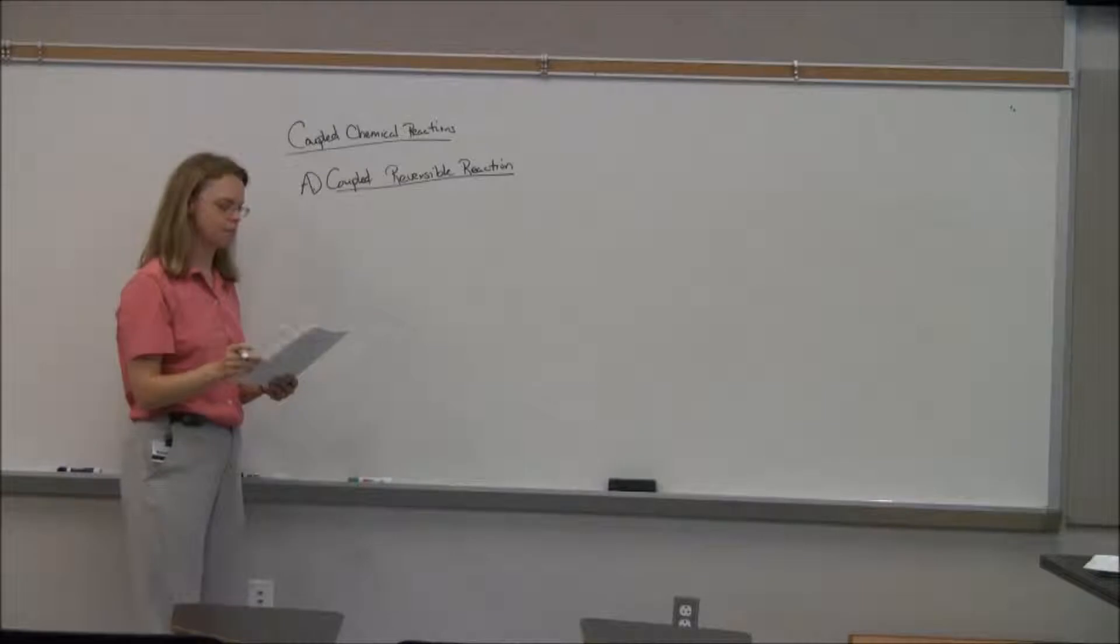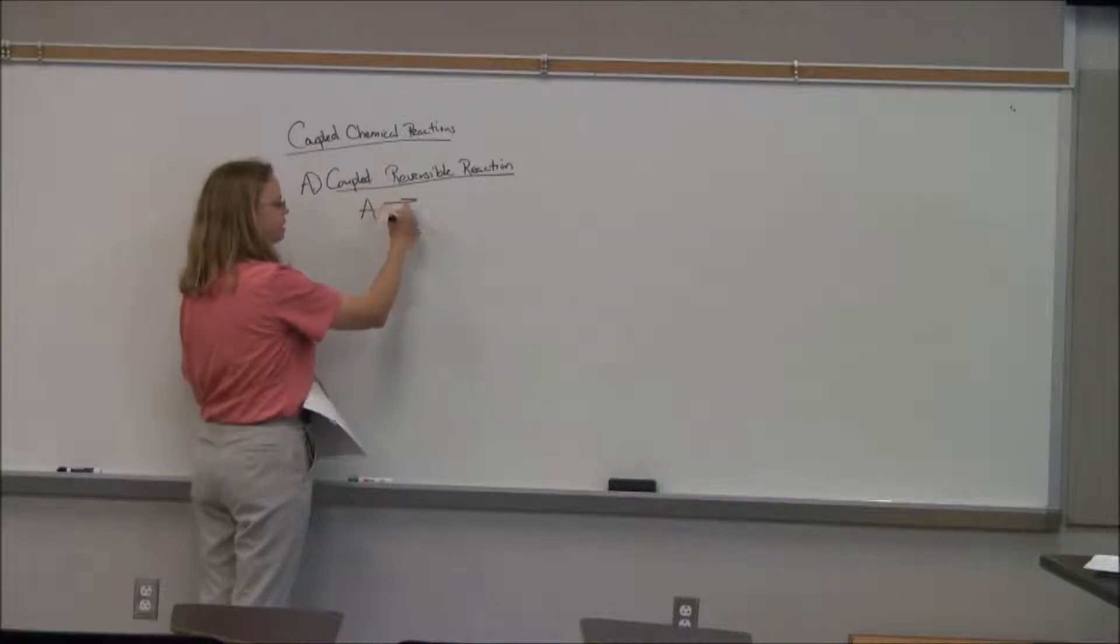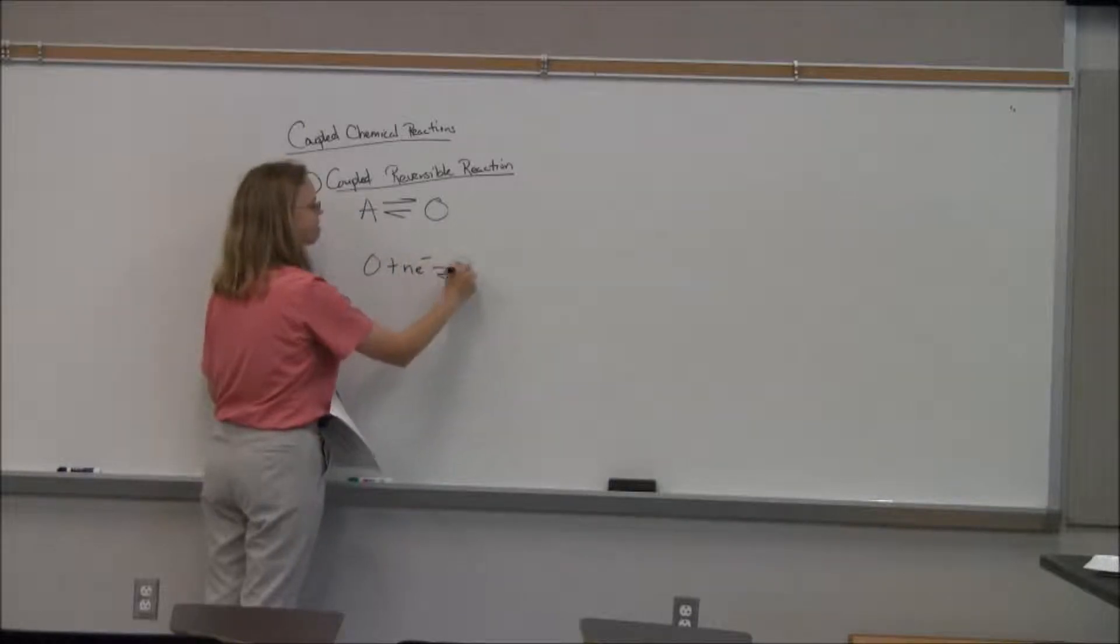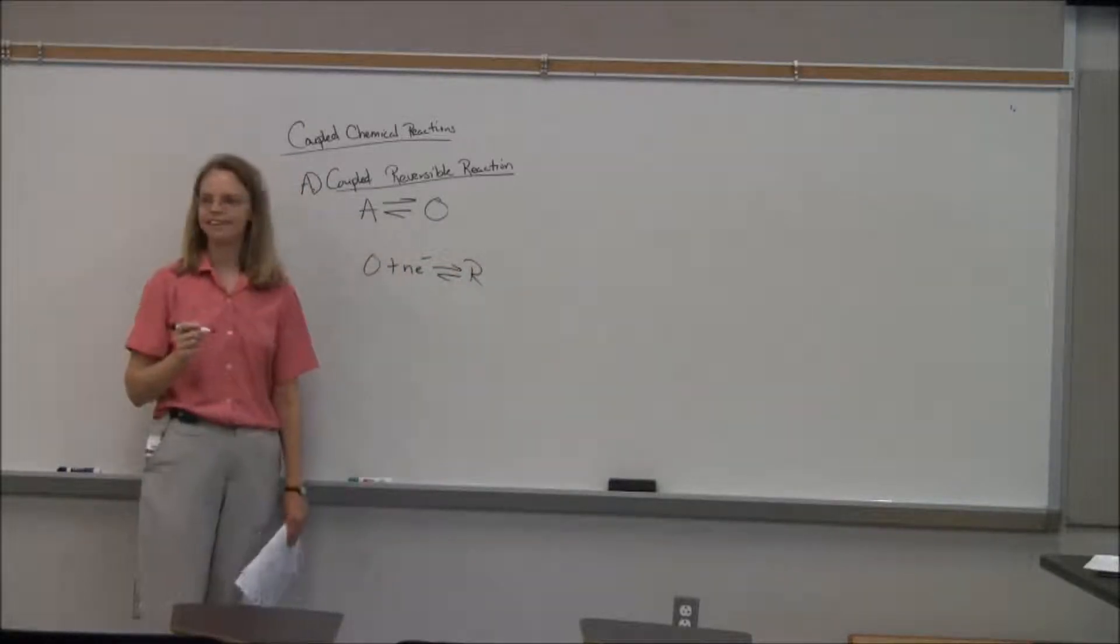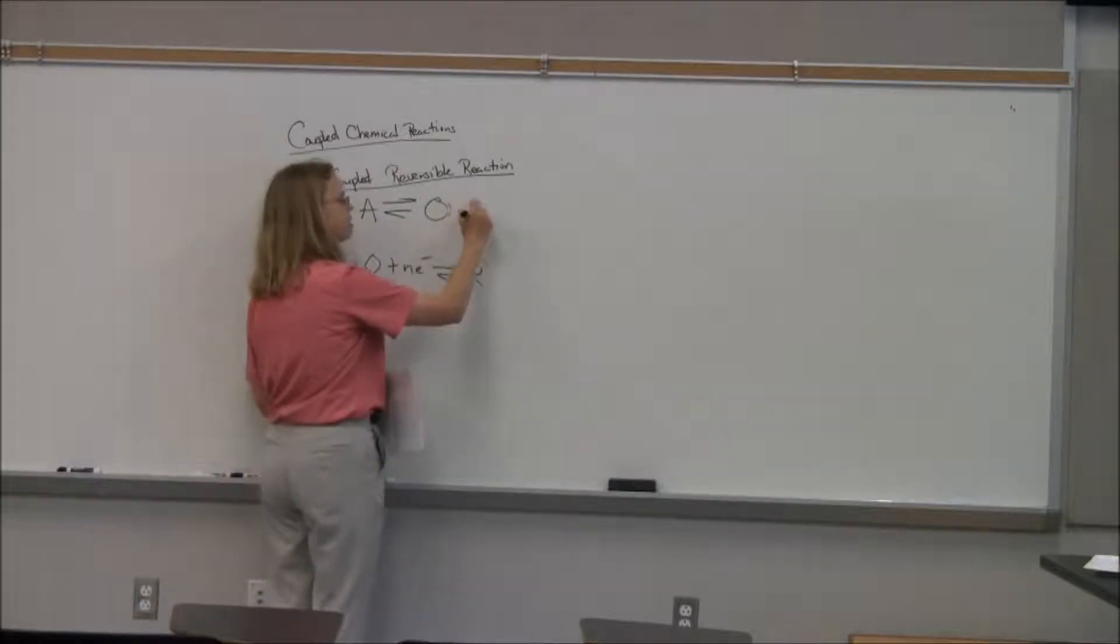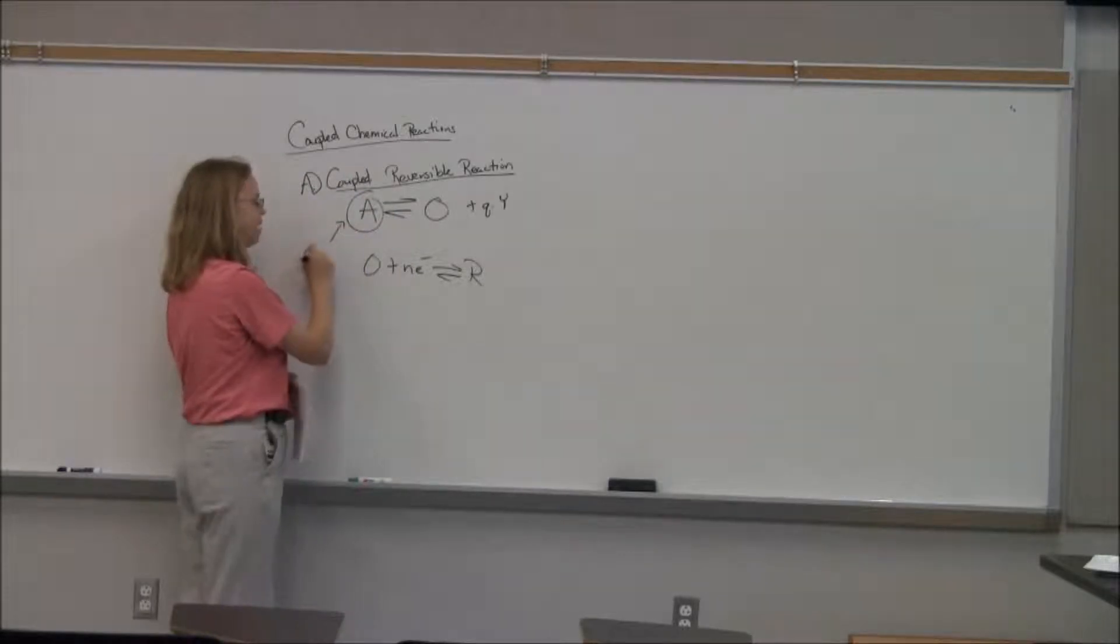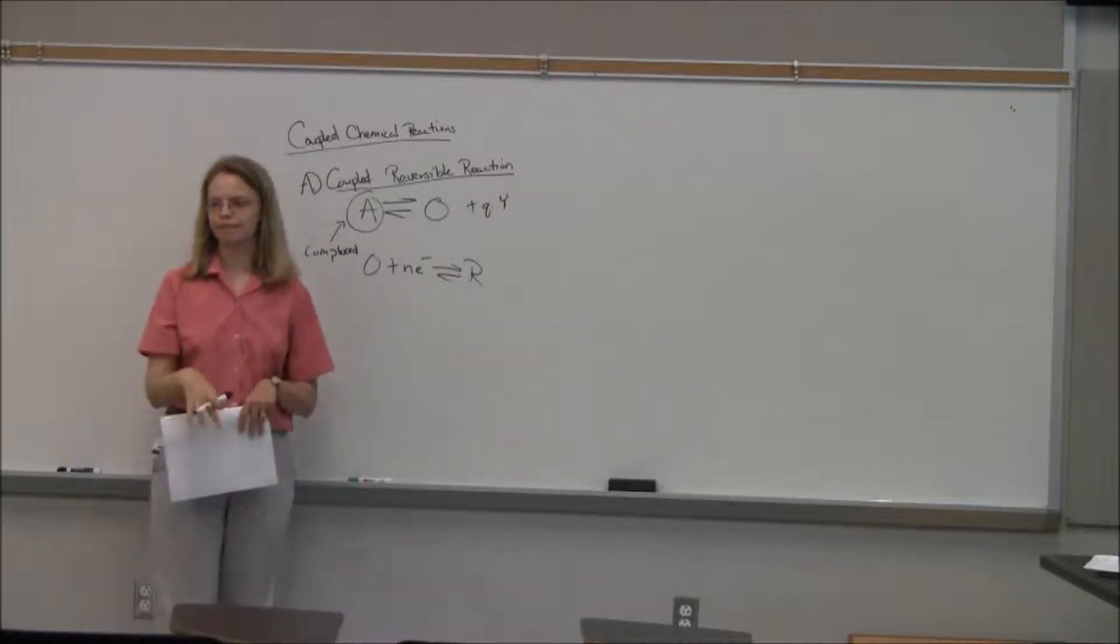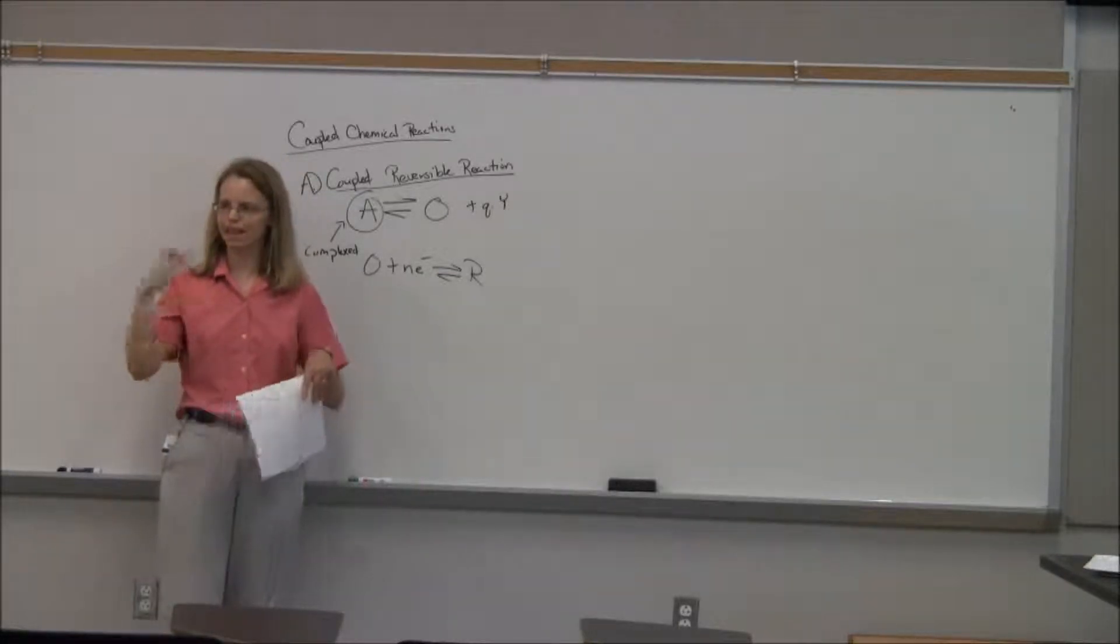So the first one is a coupled reversible reaction. Let's say that you have A, which is in equilibrium with O. And O, we're going to do this as our reaction. So O then is going to go to R. But A can go back and forth when it turns out, in this case, that a lot of times this A tends to be something that is complexed. Think of like EDTA complexing calcium or magnesium or something like that. It can go in and out of being complexed. There's an equilibrium there.